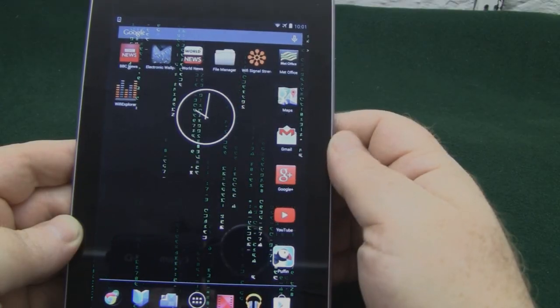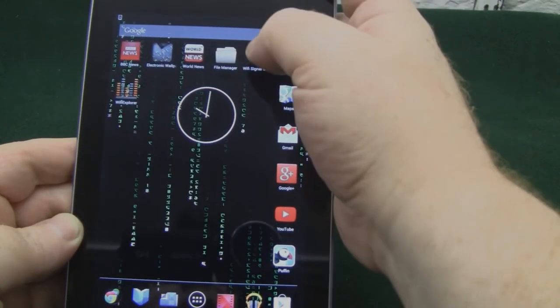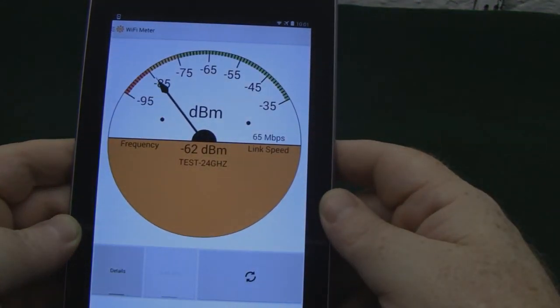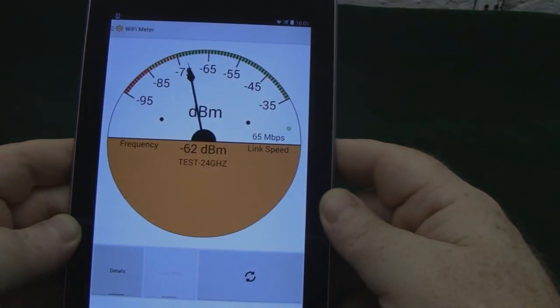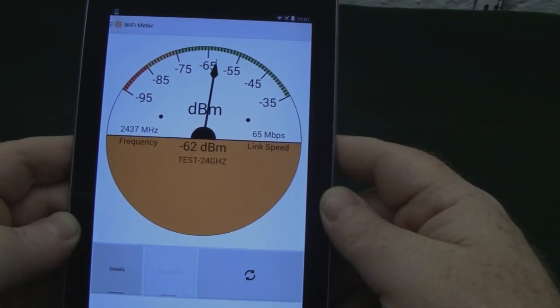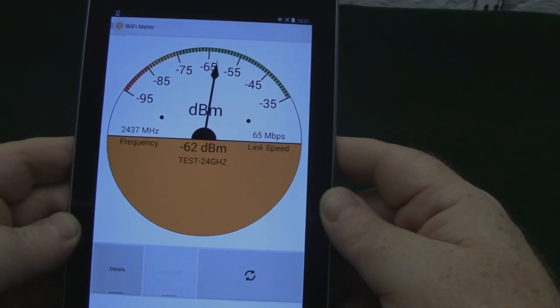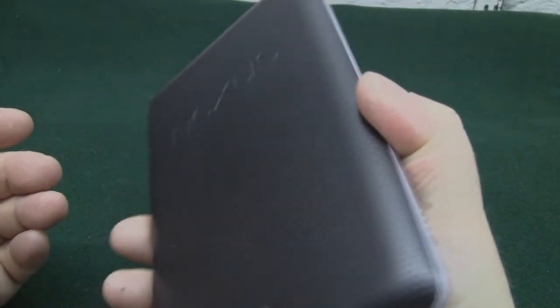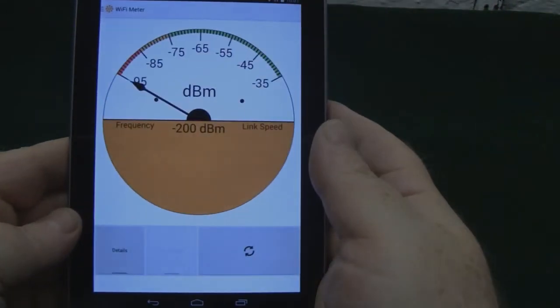We've got the modified back fitted now, so let's have a look at that signal strength—hopefully it'll be up in the green. Not bad at all! Much better and improved signal just by modifying that internal antenna. Of course, the beauty of this mod is from the outside it just looks like a normal Nexus 7.